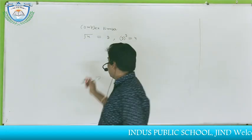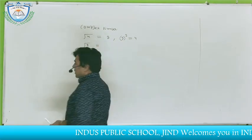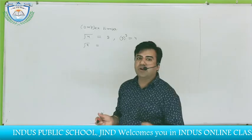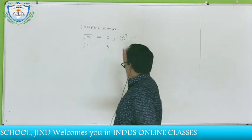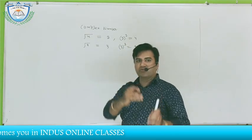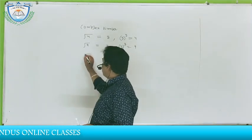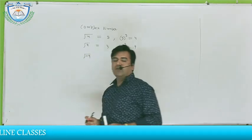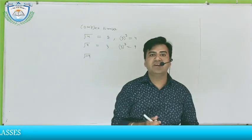Let us take one more example. If you want to find the square root of 9, no doubt it is equal to 3, because 3 squared equals 9. Now the typical question being asked is: what is the square root of minus 9? This is a question you are being asked — what is square root of minus 9?